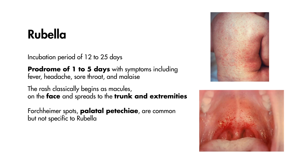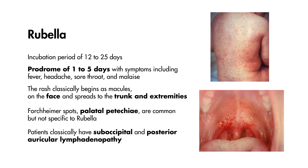Forchheimer spots are commonly associated with but not specific to rubella, since they are often seen in other diseases. Additionally, in cases of rubella, patients will classically have suboccipital and posterior auricular lymphadenopathy.